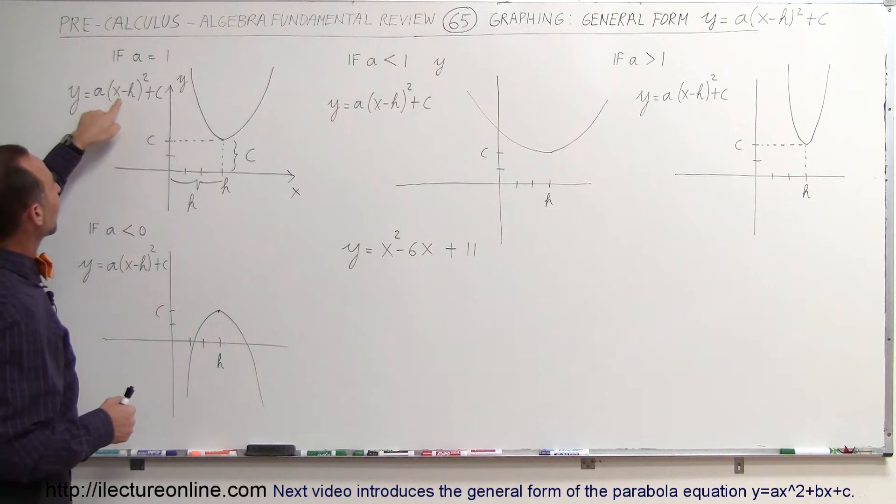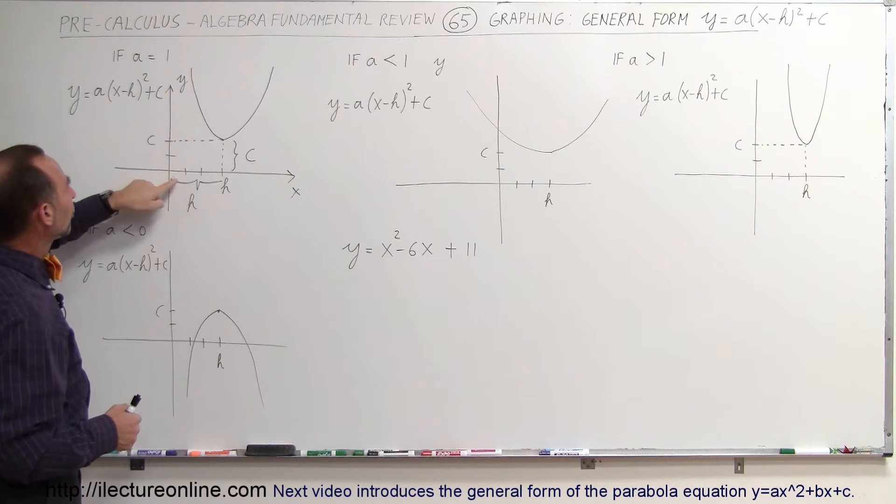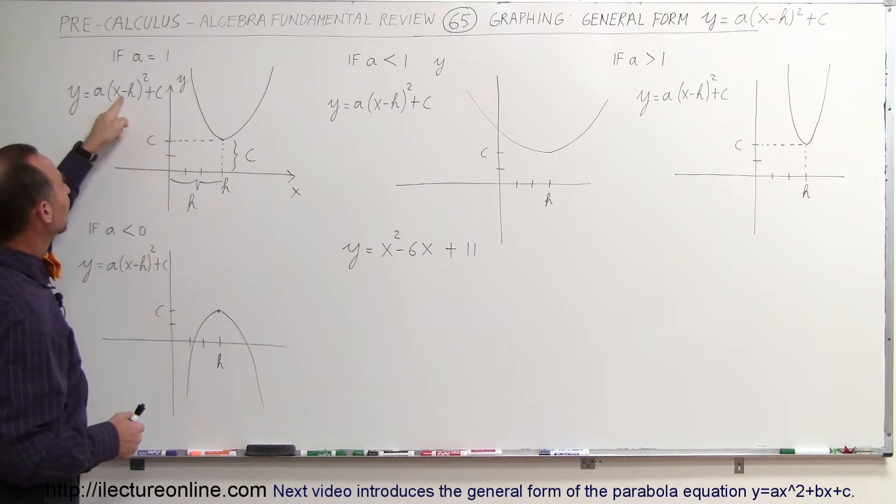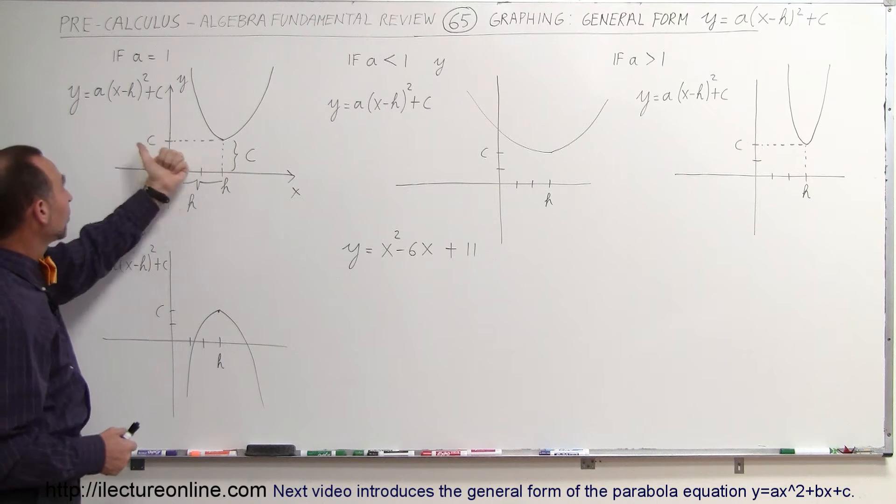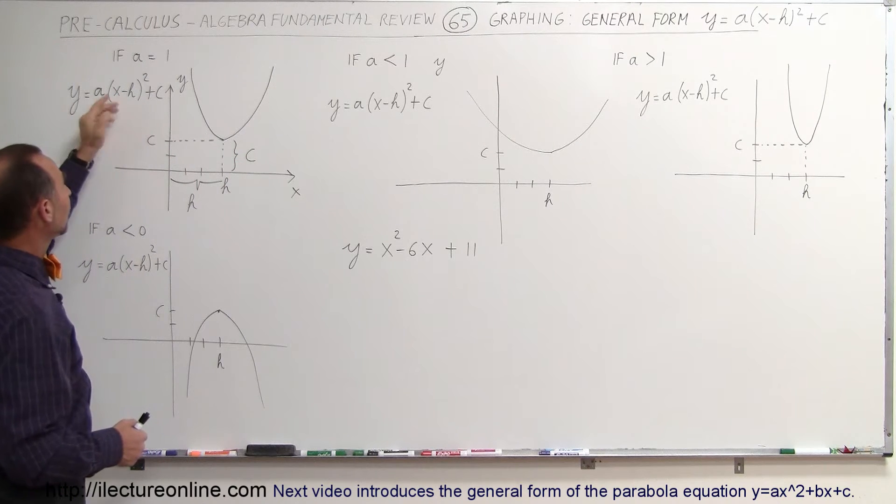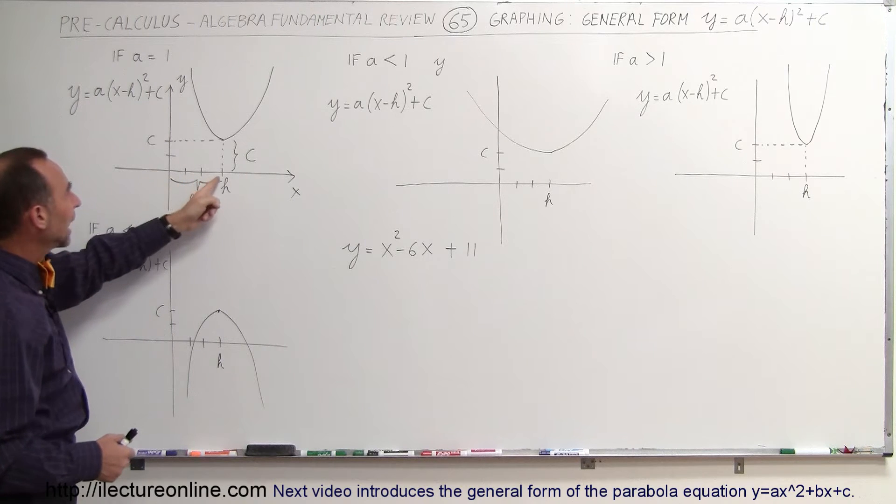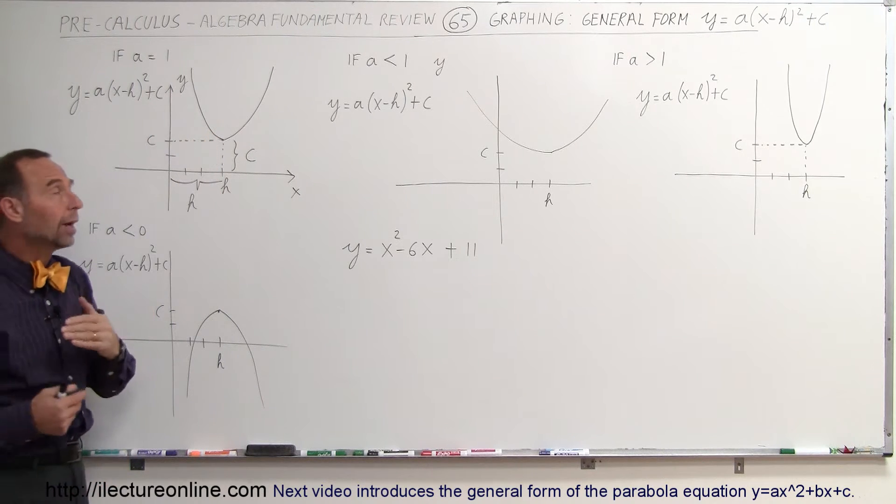When we have x minus h here, we look for h units on the x-axis. If this is a negative sign, the graph will be shifted to the right. If it's a positive sign, the graph will be shifted to the left. Here it will be shifted to the right h units, so whatever the h is, that's how far the graph will be shifted to the right.